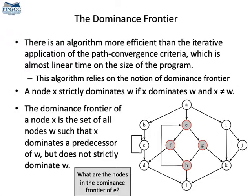From this set, it's easy to come up with the dominance frontier of e. The dominance frontier of a node is the set of vertices in the graph that the node almost dominates. For instance, e dominates f, which is a predecessor of d, but e does not dominate d. Therefore, d belongs to the dominance frontier of e.